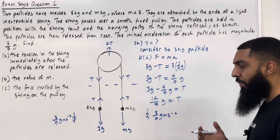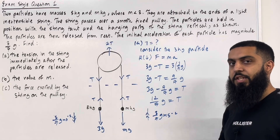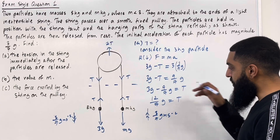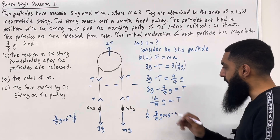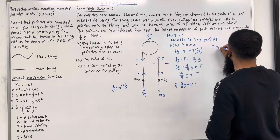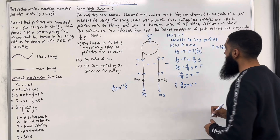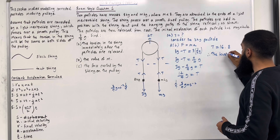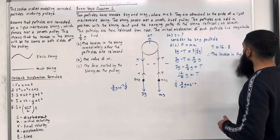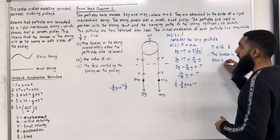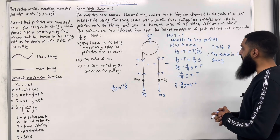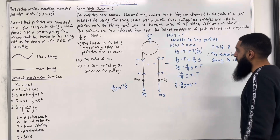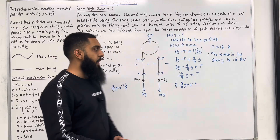Substituting g = 9.8 m/s² gives T = 12/7 × 9.8 = 16.8. Therefore, the tension in the string immediately after the particles are released is 16.8 N. This completes part A of exam style question 1.